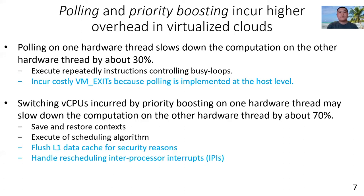VCPU switches incurred by priority boosting on one hardware thread may slow down the computation on the other hardware thread by about 70%. They cause large slowdowns because L1 data cache needs to be flushed during VCPU switches